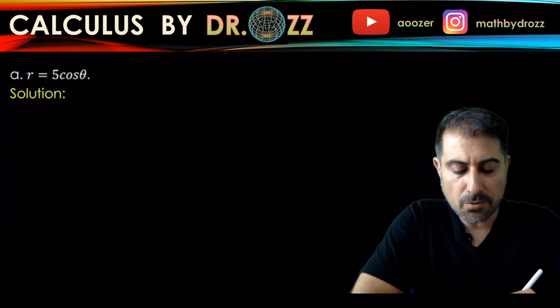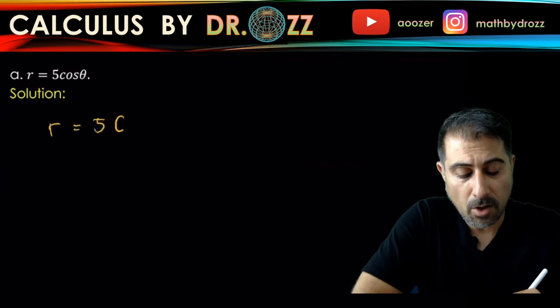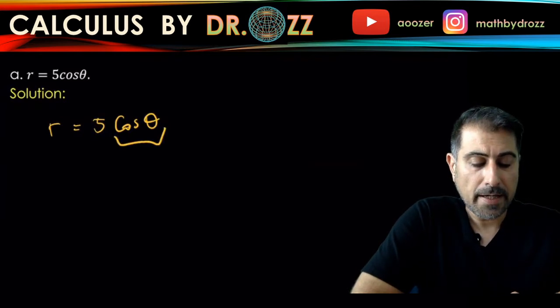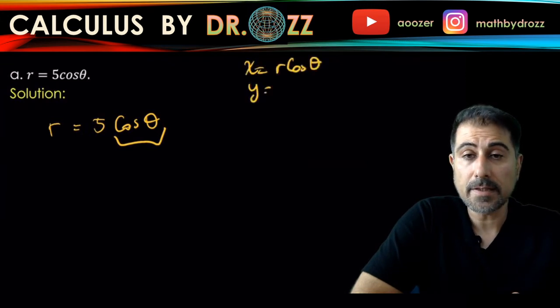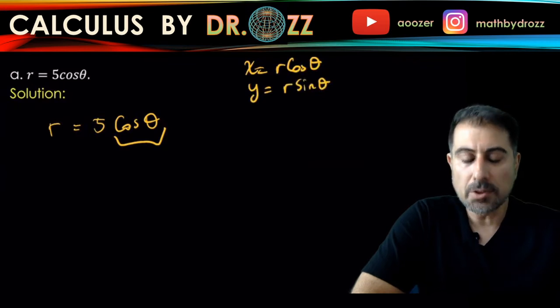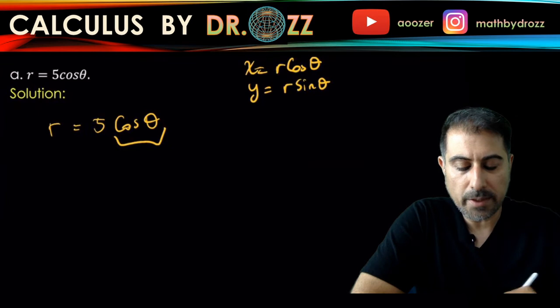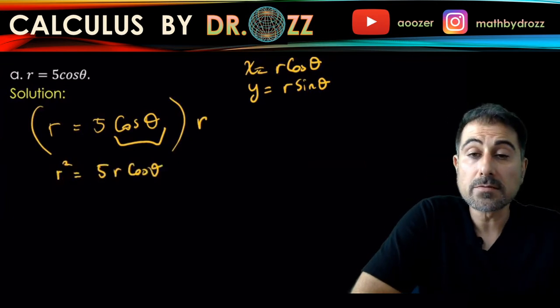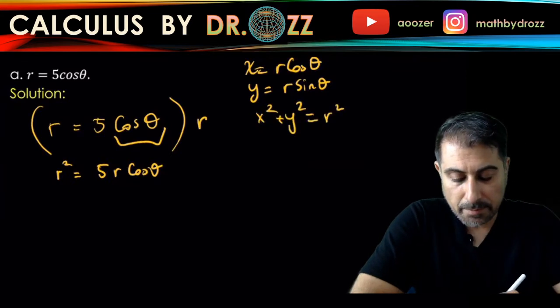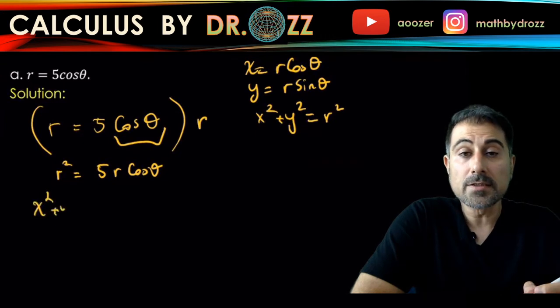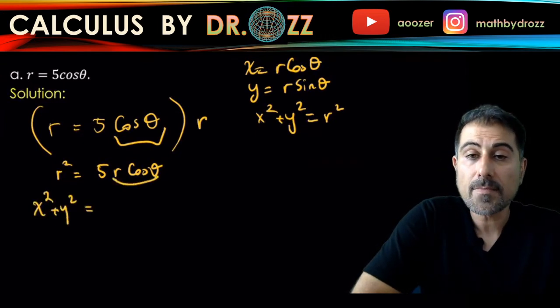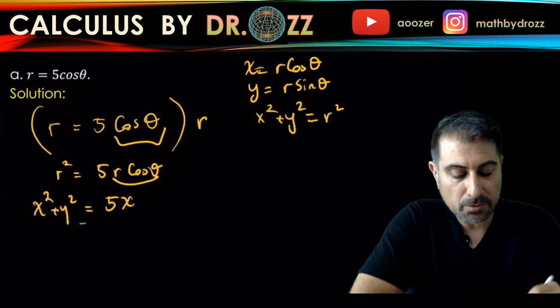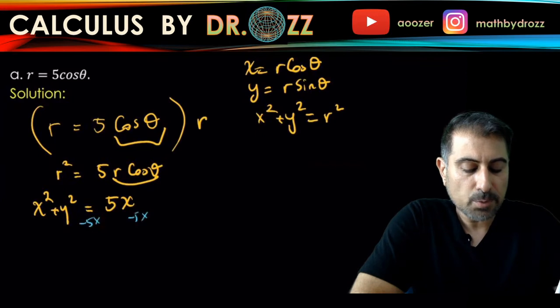So I have r equals five cosine theta. And if I had an r in front of a cosine, I would have that to be equal to x, because we have x equals r cosine theta, y equals r sine theta. So now I'm going to algebraically manipulate the equation. I'm going to multiply both sides by r, so that r squared is five r cosine theta. And in fact, I know that x squared plus y squared equals r squared. So now I can replace r squared by x squared plus y squared. And r cosine is just x. So that's equal to five x. So let's keep all in one side of the equation. Subtracting five x from both sides, you have x squared minus five x plus y squared equals zero.